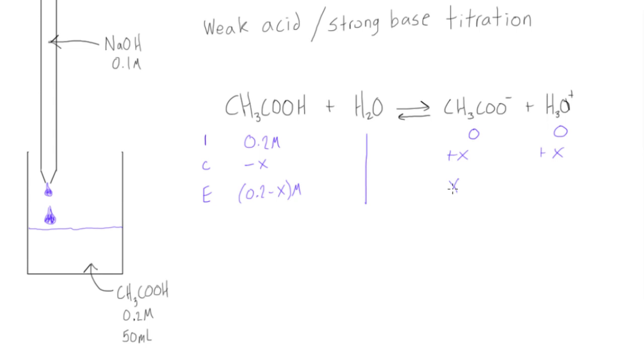This will be x molar and this will be x molar. Now something else we can do, because we know that the Ka of acetic acid here, we'll write it here: Ka is equal to 1.8 times 10 to the negative 5.